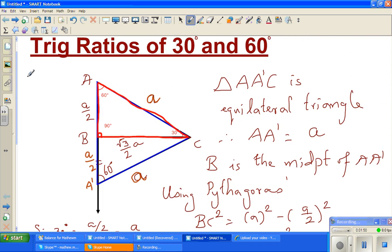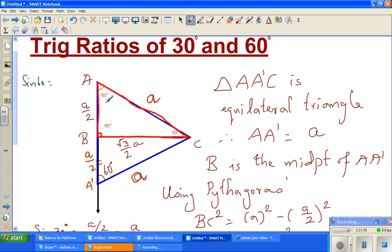So let us say now sin 60°. For 60°, this is the opposite and this is the hypotenuse. So this is √3/2 times A over A. So A and A will get cancelled. So sin 60° is √3/2, and this will be on a calculator 0.866.